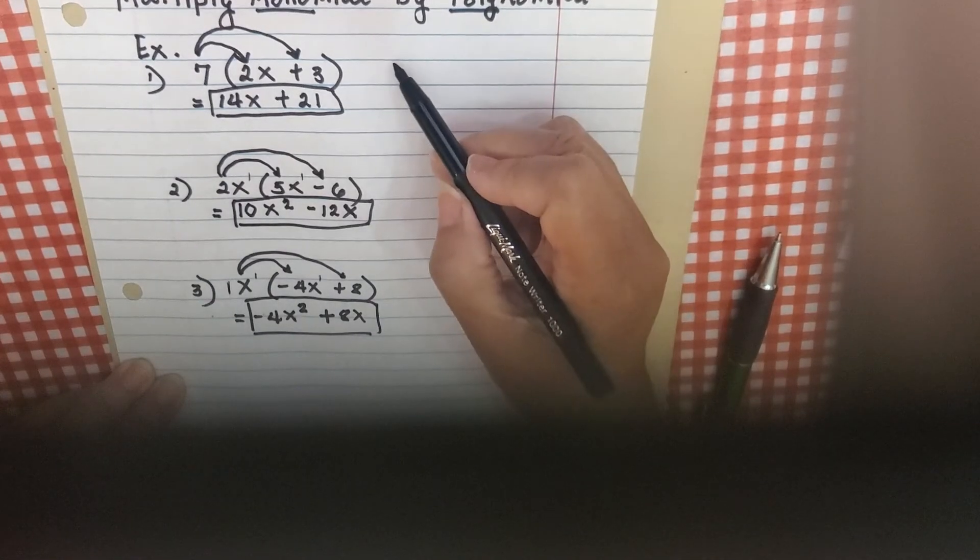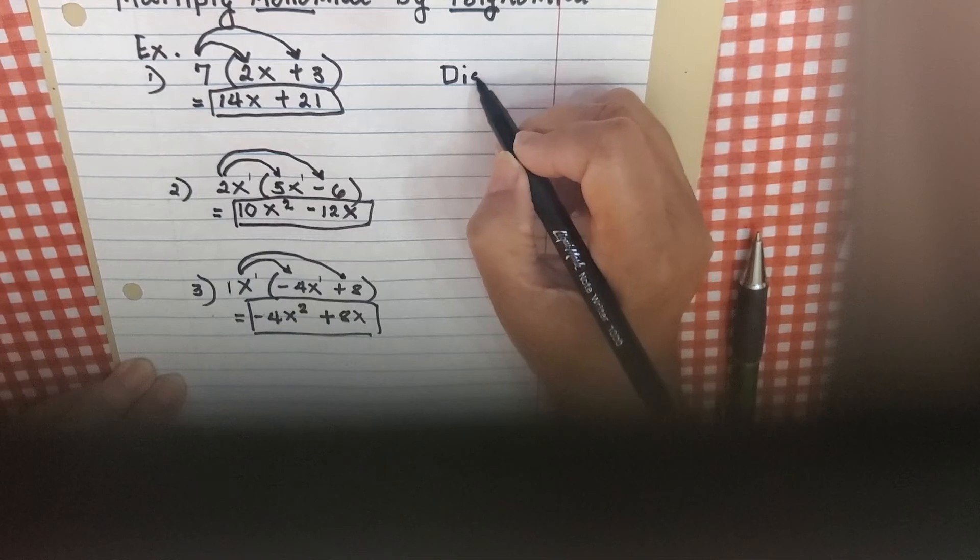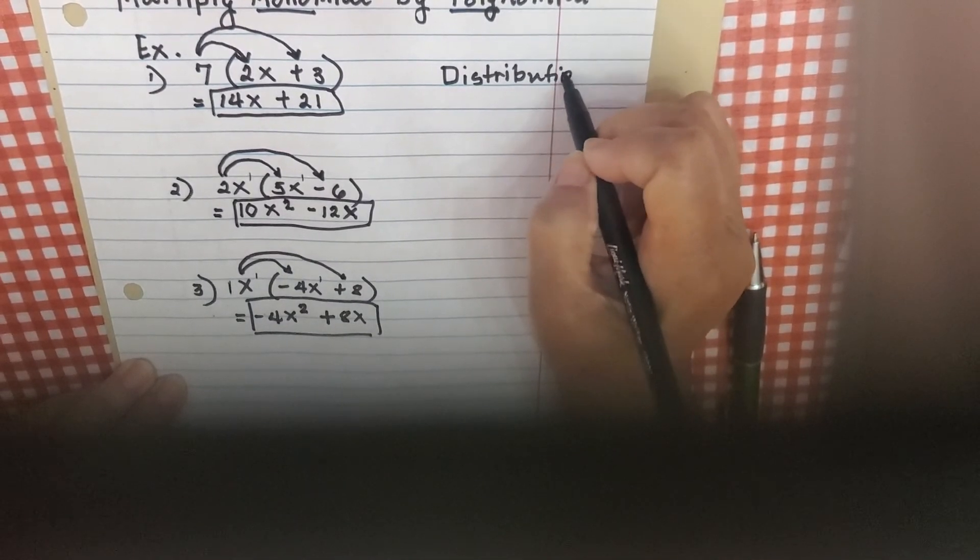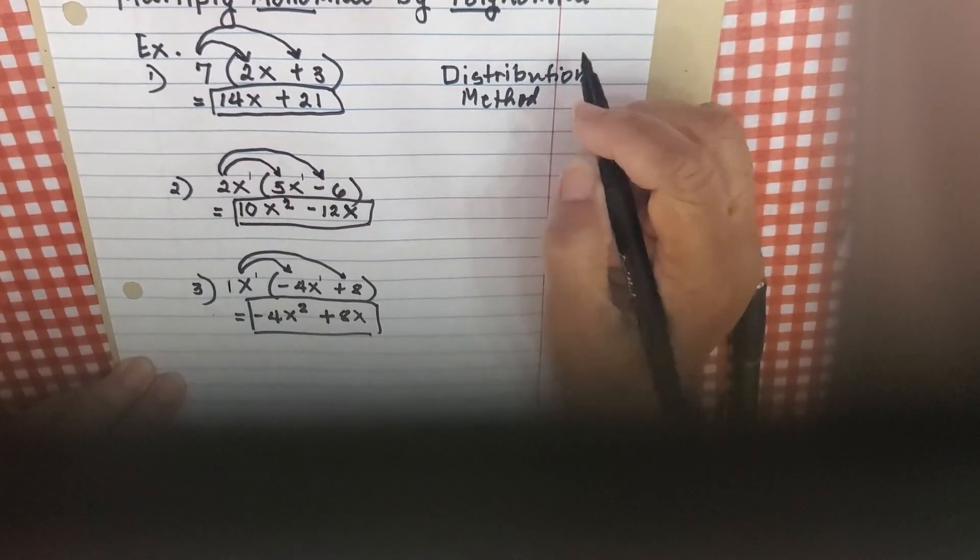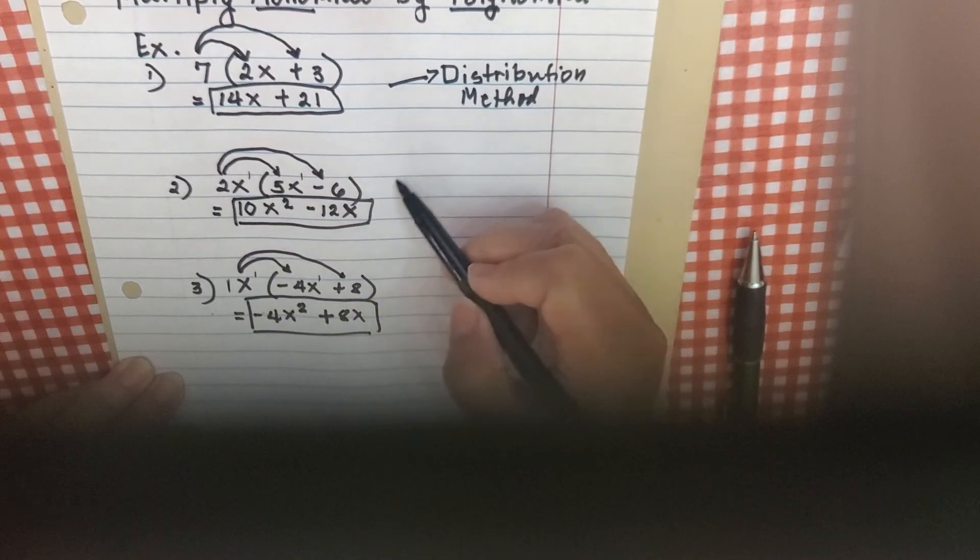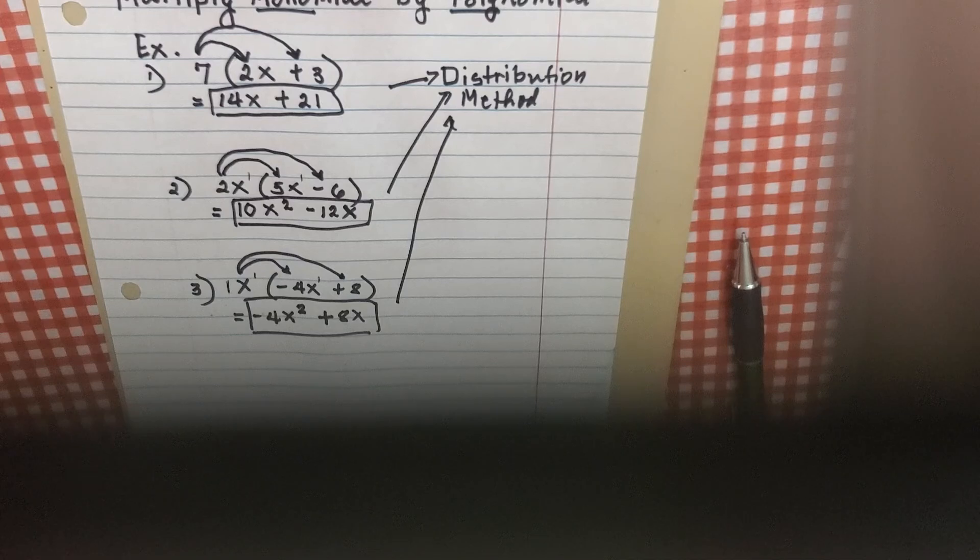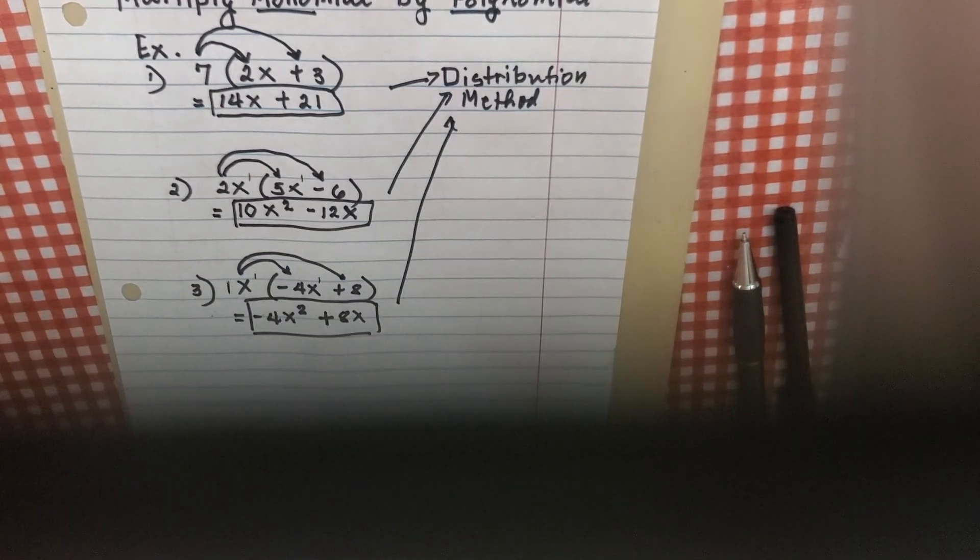So this method is called the distributive method. Why? Because we distribute. There is another method we call it box method. I'm going to explain it in the next video.